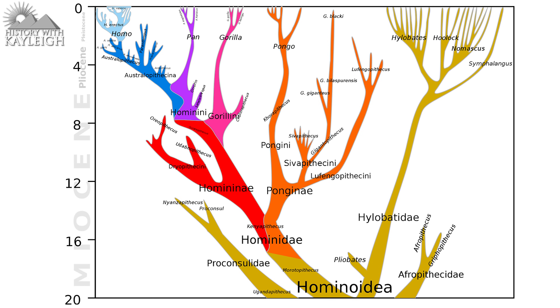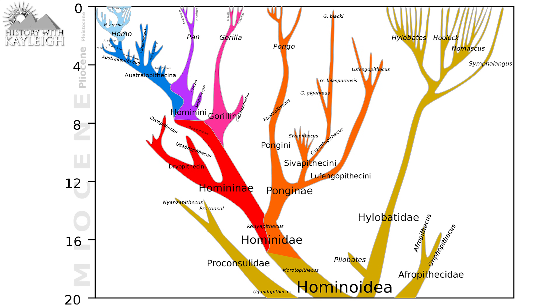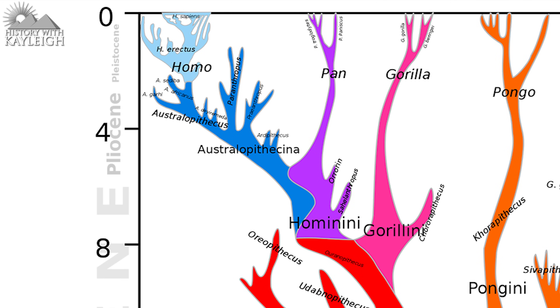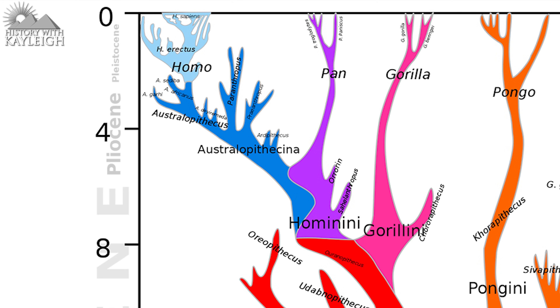Somewhere between 7 and 5 million years ago the fossil record indicates the last common Pan-Hominina ancestor, meaning around that time the Australopithecina and the Pan split. Pan leads to the modern-day chimpanzees and bonobos, while the Australopithecina are known as our ancestors — though not all species in the subtribe are ancestral to us. The subtribe Australopithecina consists of: Graecopithecus freybergi, Sahelanthropus tchadensis, Orrorin tugenensis, Ardipithecus ramidus, Ardipithecus kadabba, Paranthropus robustus, Paranthropus boisei, Paranthropus aethiopicus, Kenyanthropus platyops, and the genus Australopithecus. I've made videos on Kenyanthropus, Sahelanthropus, and Paranthropus — highly recommend watching those.